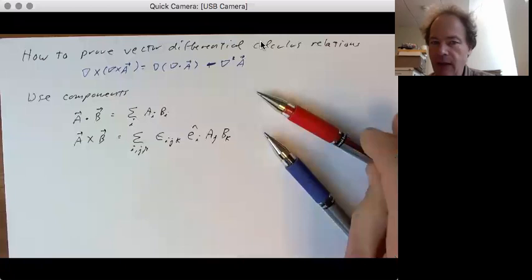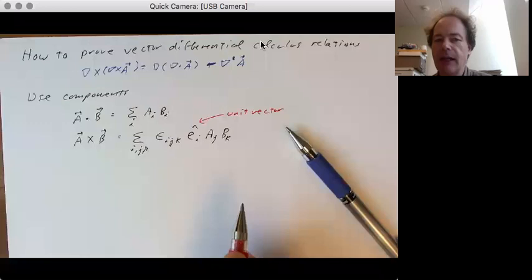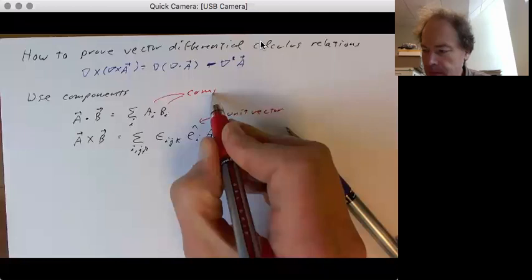Where the e here is a unit vector, right, x hat, y hat, z hat, e1, e2, e3, all hats. And these of course are components of a.